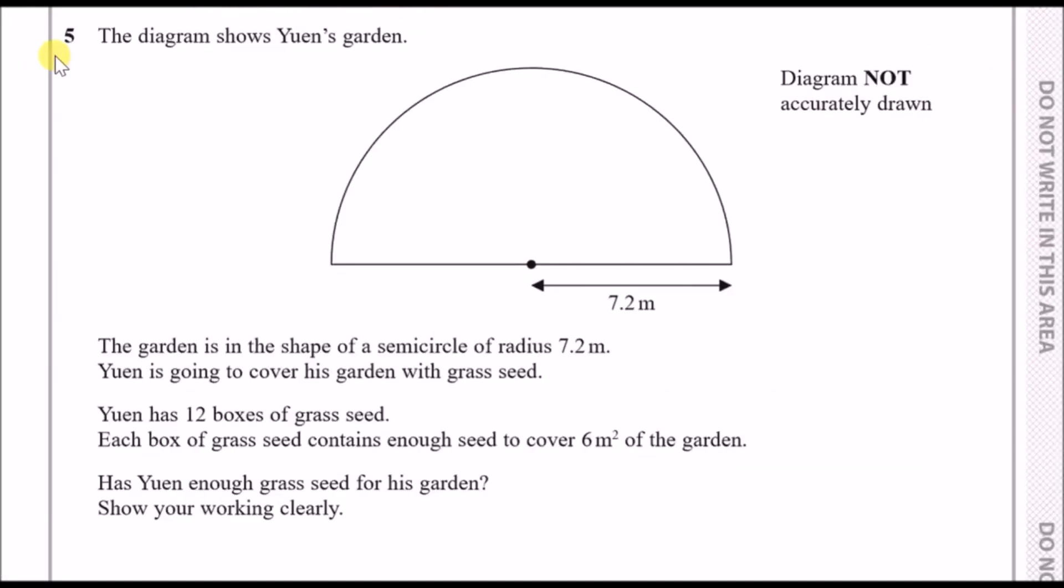Question five: the diagram shows Yuen's garden. This garden is in the shape of a semicircle radius 7.2 meters. Yuen is going to cover his garden with grass seed. Yuen has 12 boxes of grass seed and each box contains enough seed to cover about 6 meters squared of the garden. Well does he have enough grass seed for his garden?